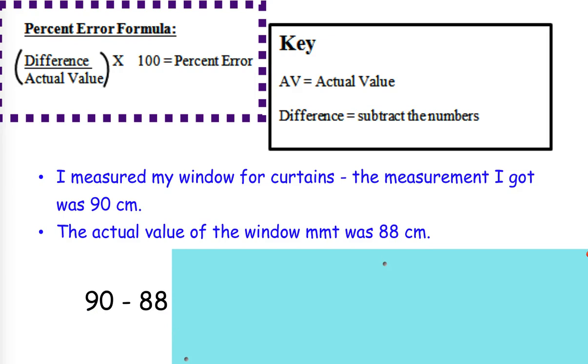I subtract them and I get an answer of 2. 90 minus 88 equals 2. Now my second step is to take that number and divide it by the actual value. I know my actual value was 88 centimeters.